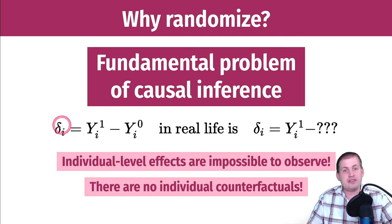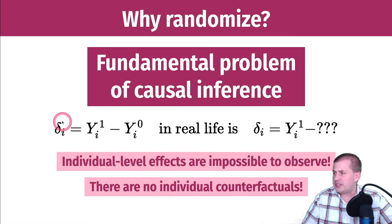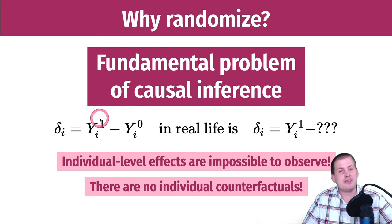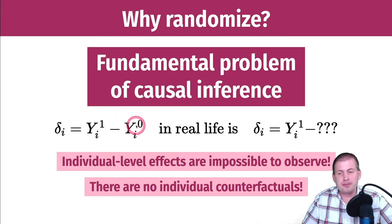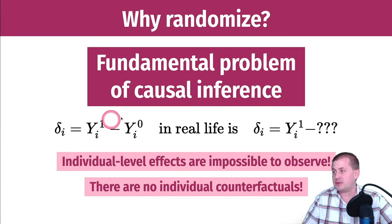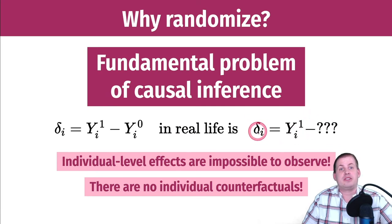When you want to find the difference — here's this lowercase delta — if you want to see the causal effect in an individual, you have to measure what would happen if they were in the program, and then measure what would happen if they weren't in the program, and subtract that outcome. But in real life, we can only see one of those things, so we can't find the individual level causal effect.